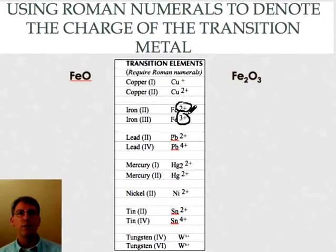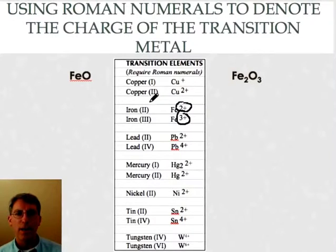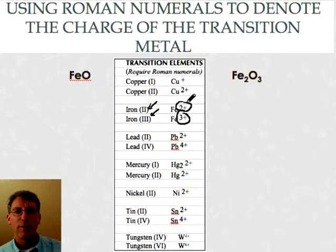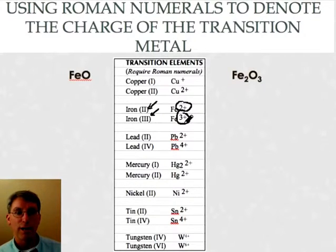So we're going to need a way to tell the reader which iron we're talking about. And to do that we use a Roman numeral right here. And the Roman numeral simply tells you what the charge of the iron is. So here iron with the Roman numeral two tells you have a plus two charge and iron with a Roman numeral three tells you that you have a plus three charge on the iron.